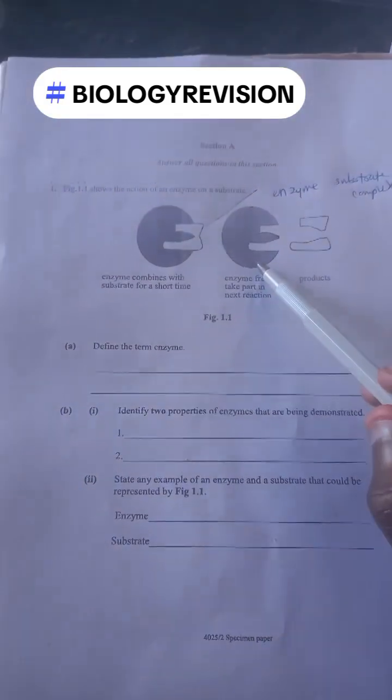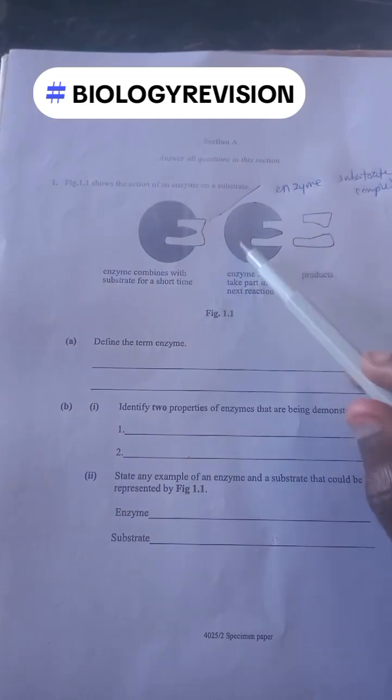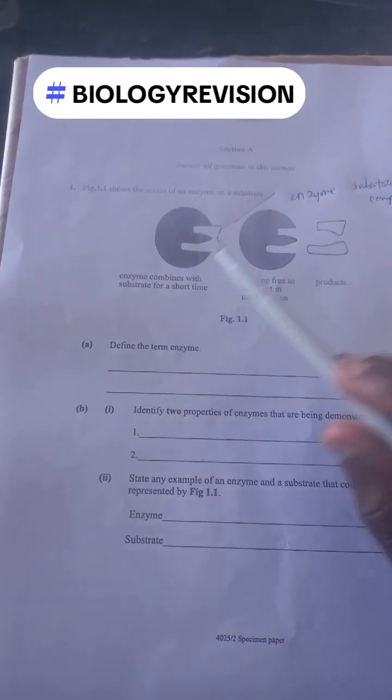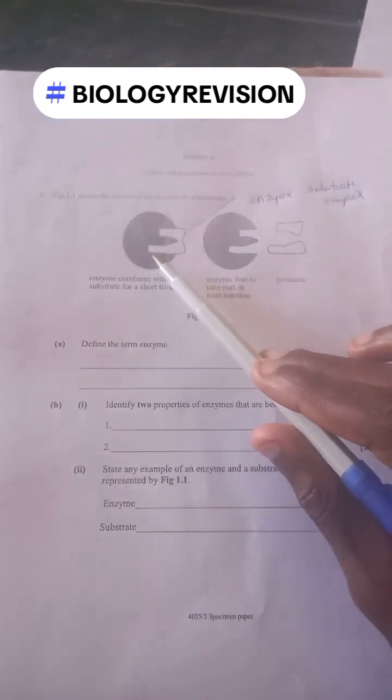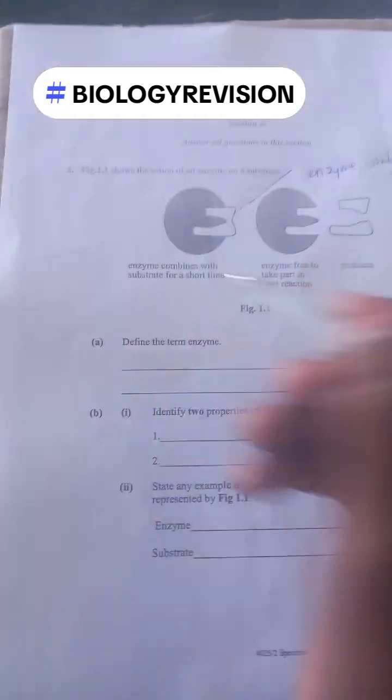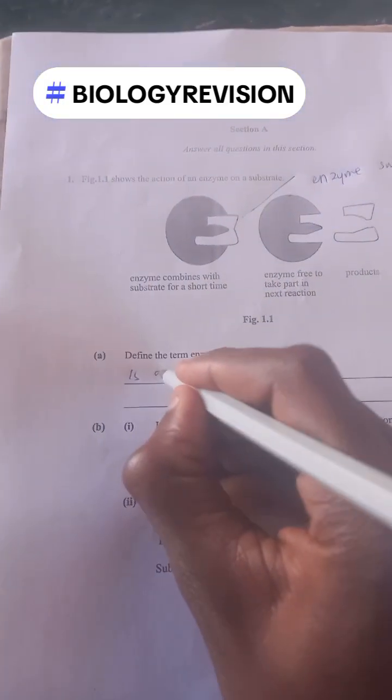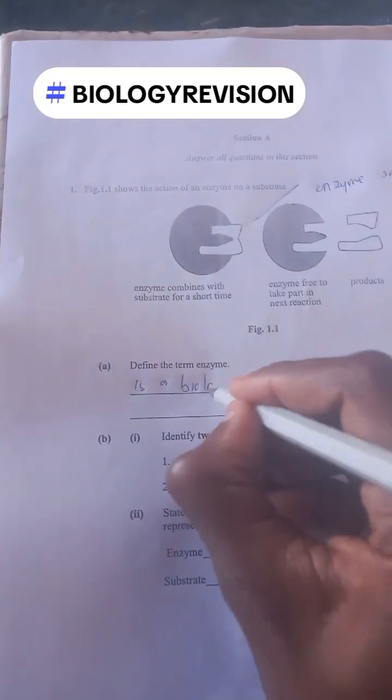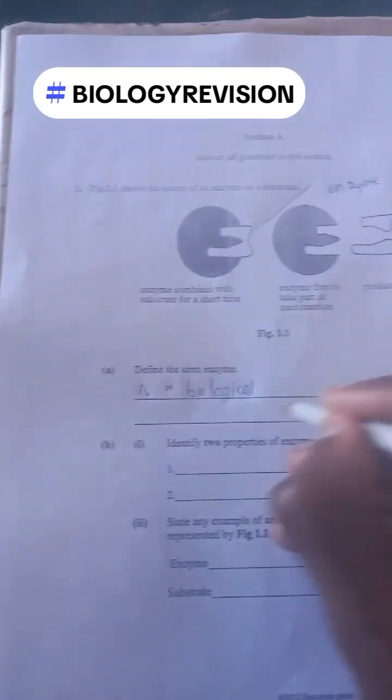The enzyme combines with the substrate for a short time, then the enzyme is free to take part again. As you can see, the enzyme is now free at this position. The enzyme was combined with the substrate and these are the end products. Define the term enzyme.